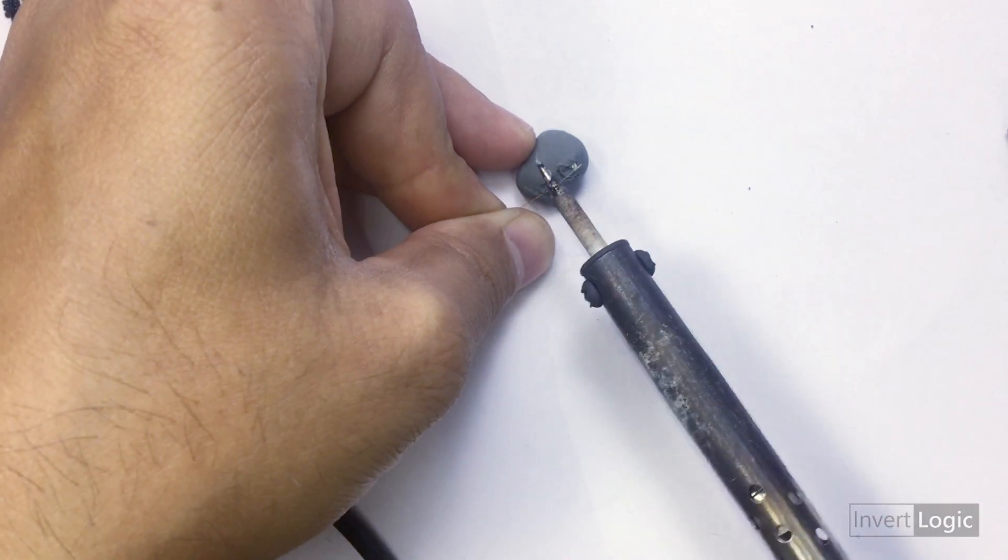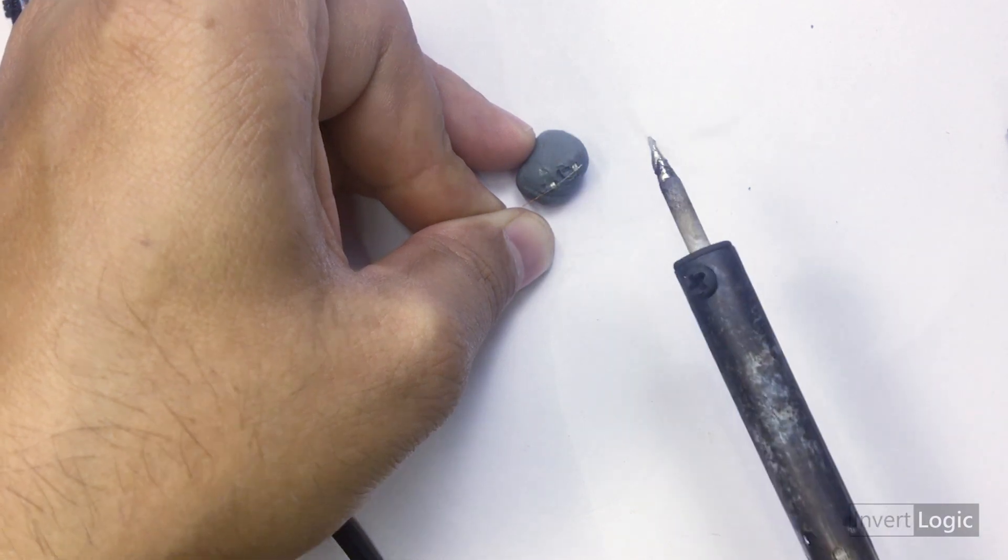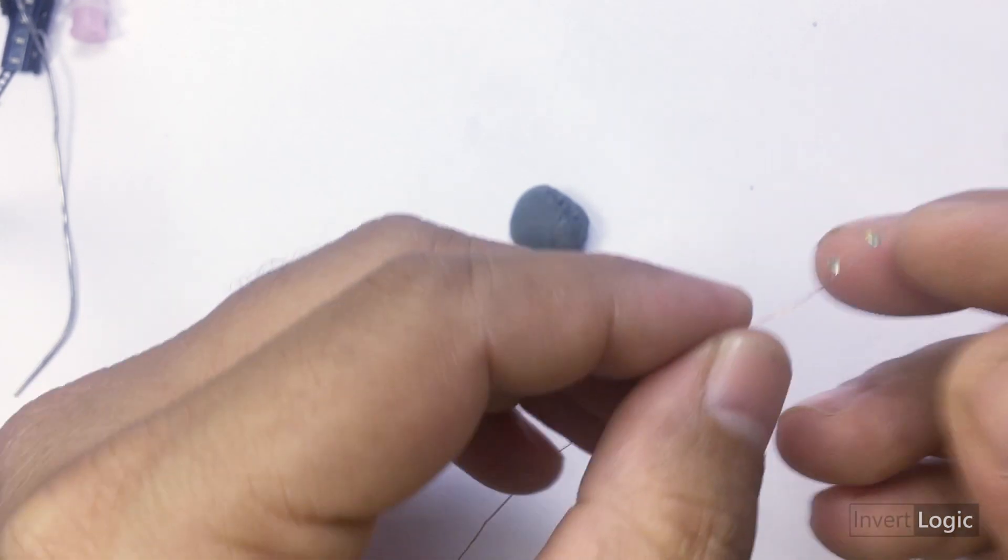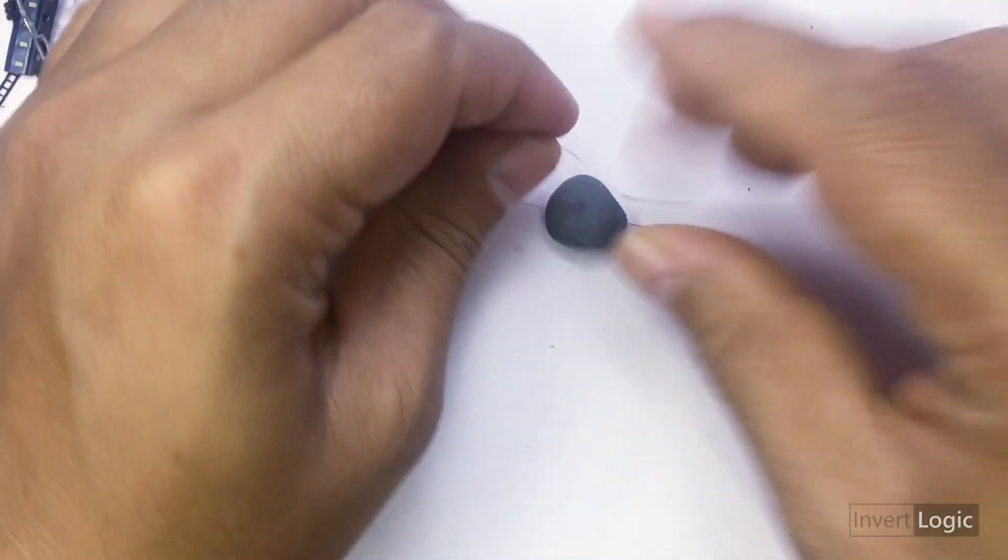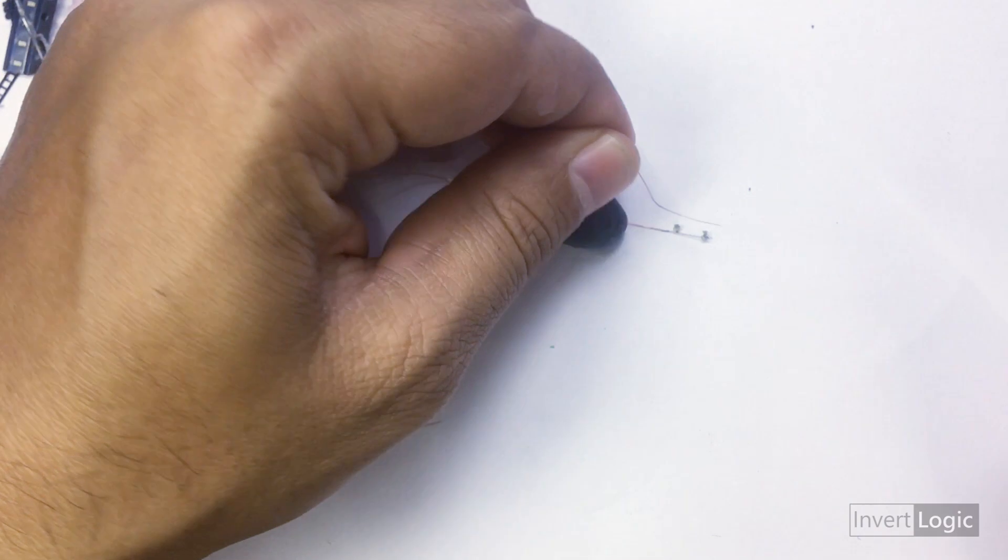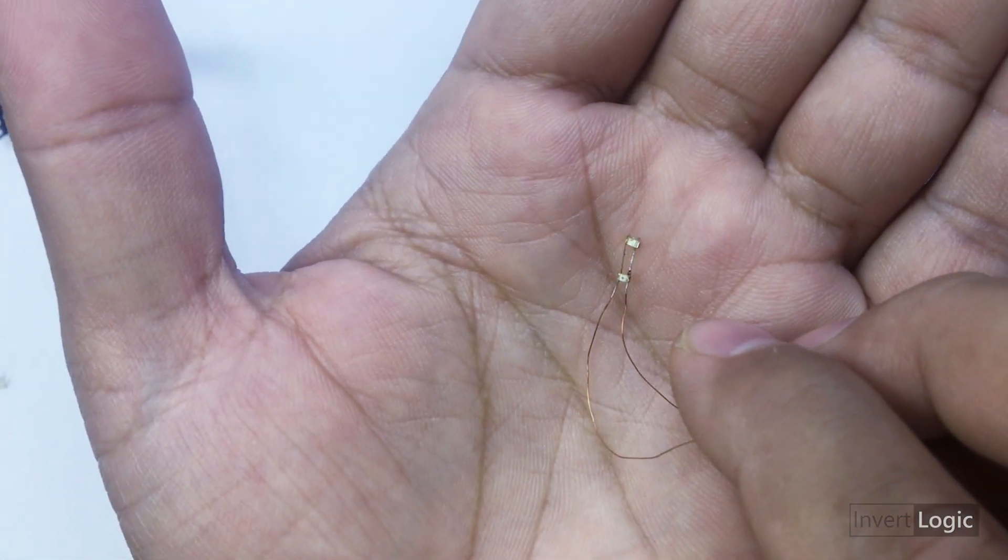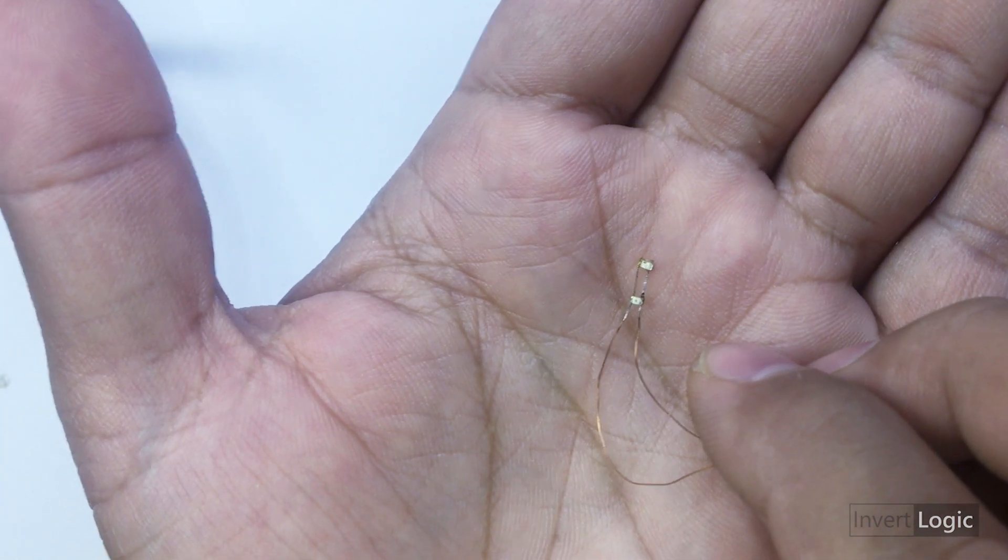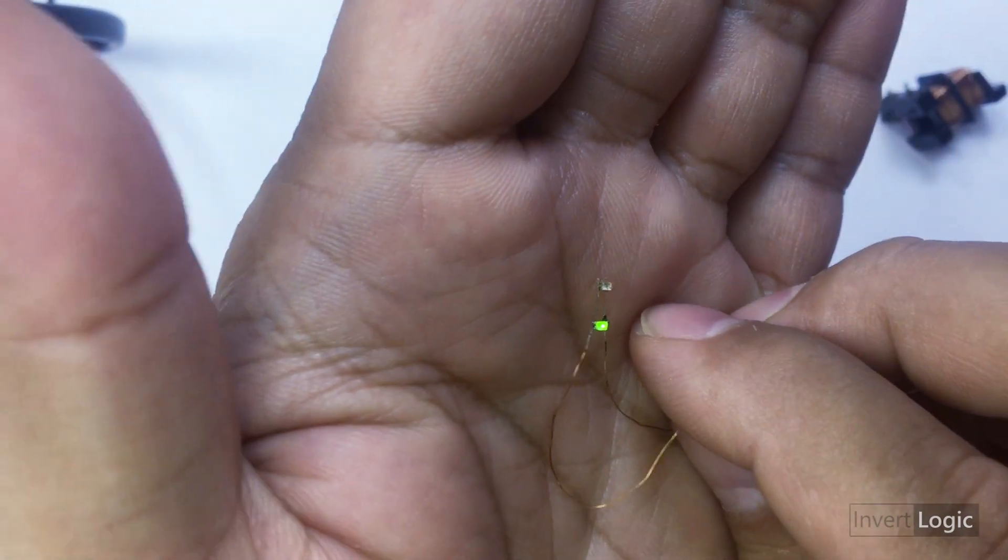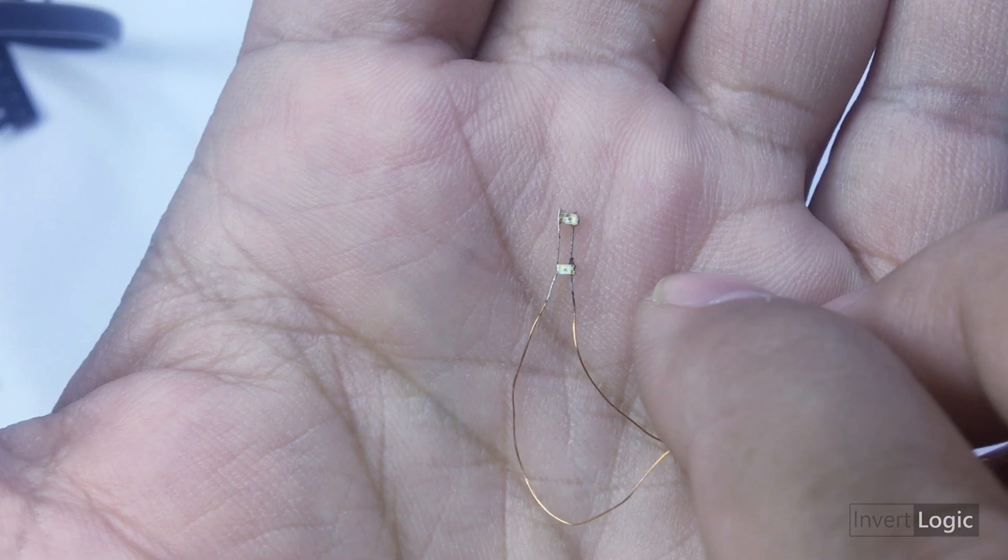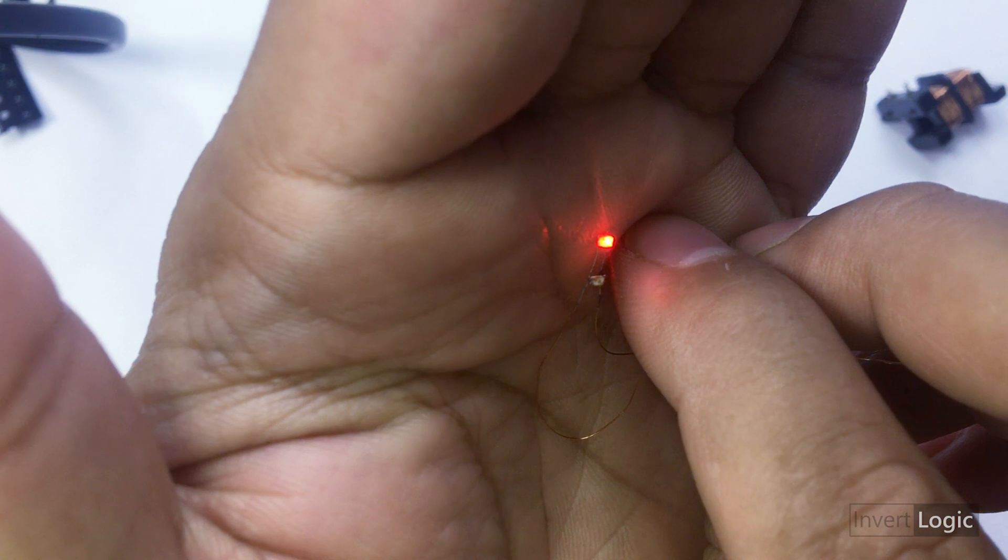Now once we solder both the ends of the LEDs, use clay or anything that helps you to solder it properly. Here you can see that we are testing the LEDs and they are working fine. We have connected them in reverse so we have to touch them to test.